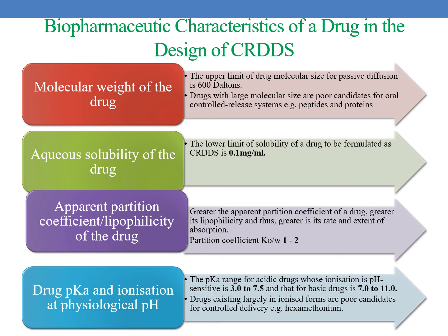The next biopharmaceutical characteristic is aqueous solubility of the drug. A drug with good aqueous solubility, especially if pH independent, serves as a good candidate for controlled release dosage forms — example is pentoxifylline. The lower limit for solubility of a drug to be formulated as CRDDS is 0.1 mg per ml.